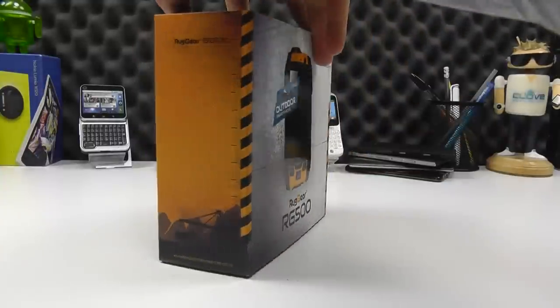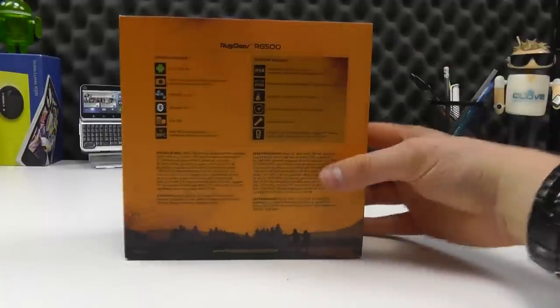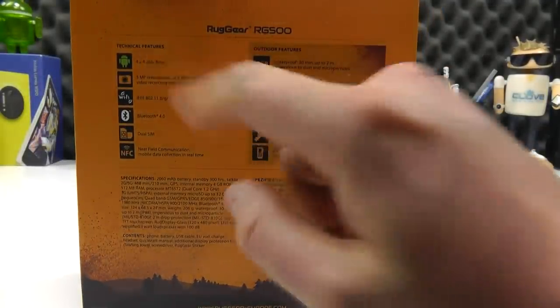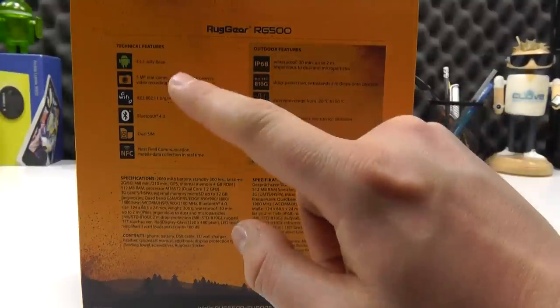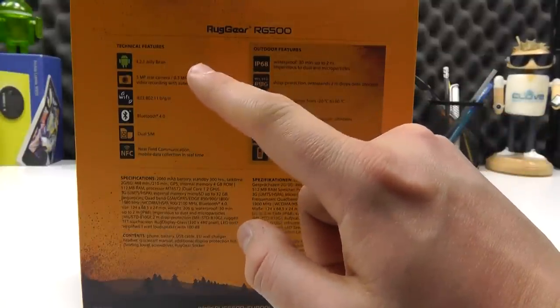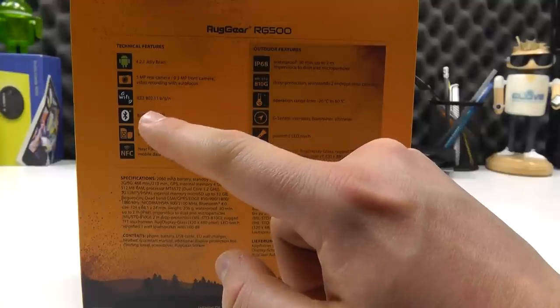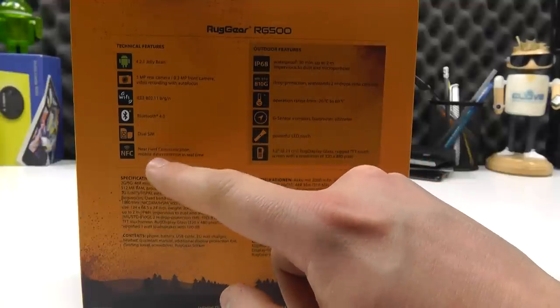As the sticker on the front of the box indicates, it's IP68 rated and really designed for those who need to use their phone a lot outdoors. This is the retail packaging, and on the back we get a rundown of some of the key specifications.